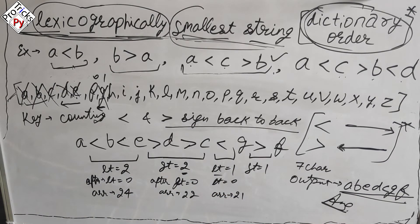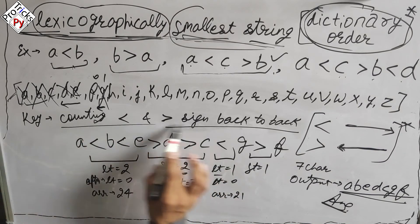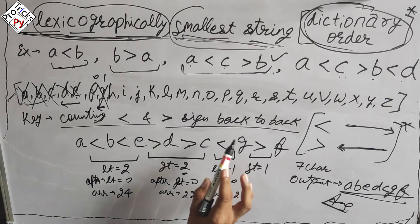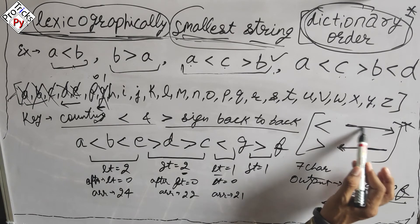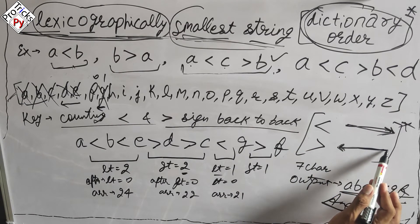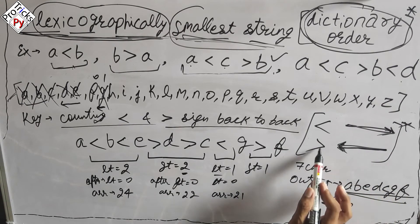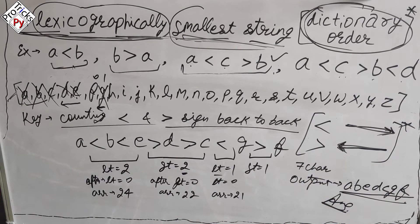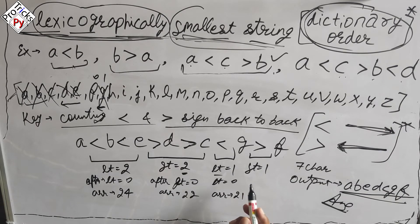The main thing to remember is: count consecutive less-than and greater-than signs, go left to right for less-than, and right to left for greater-than. Now let's move to the code — try to code it yourself first before continuing.